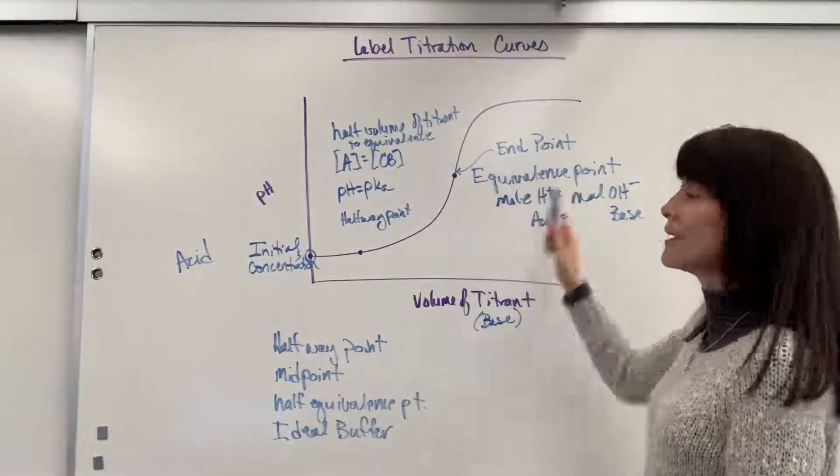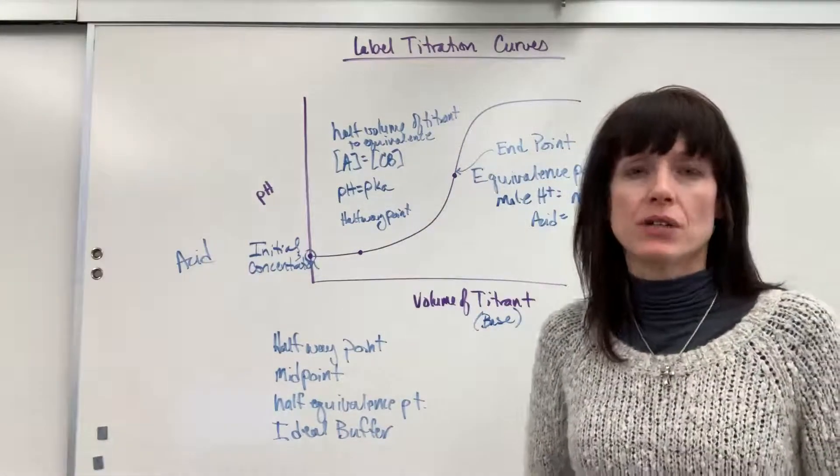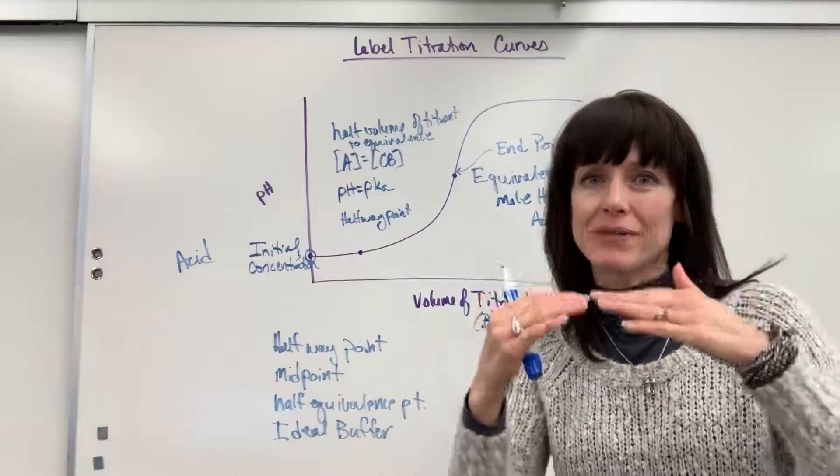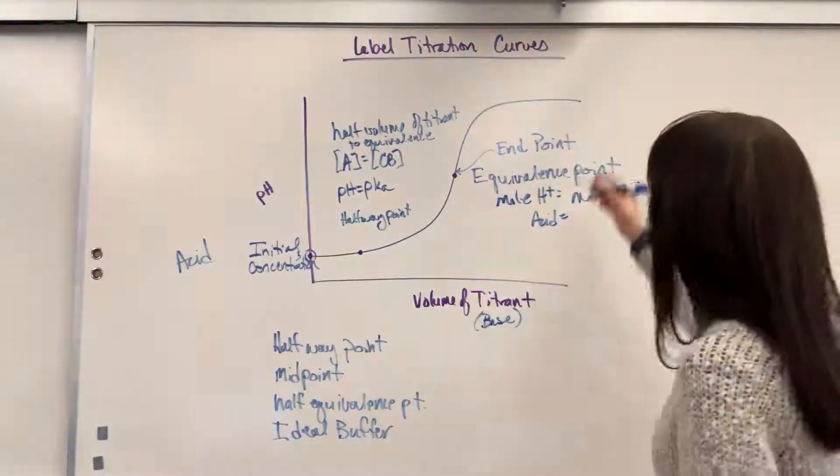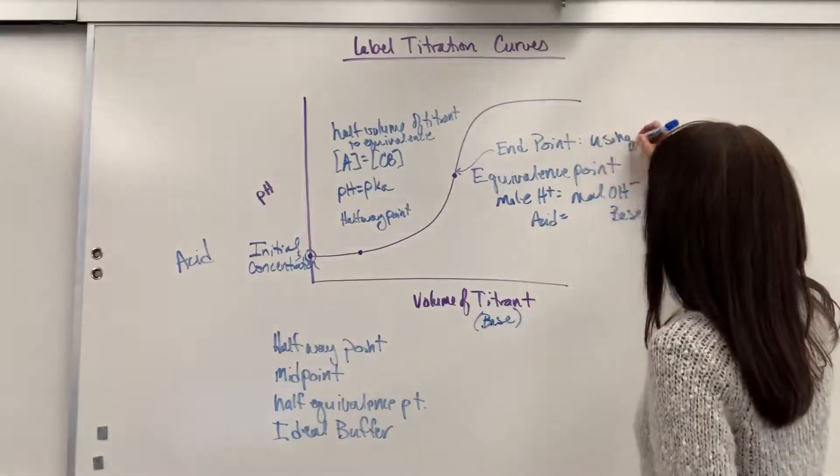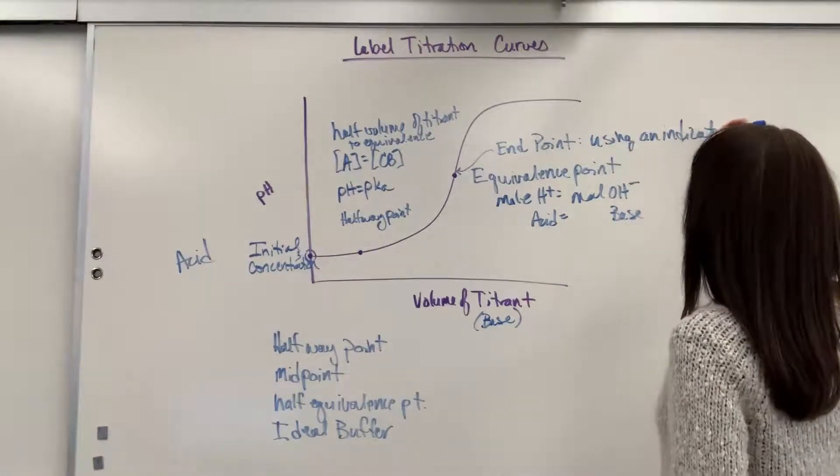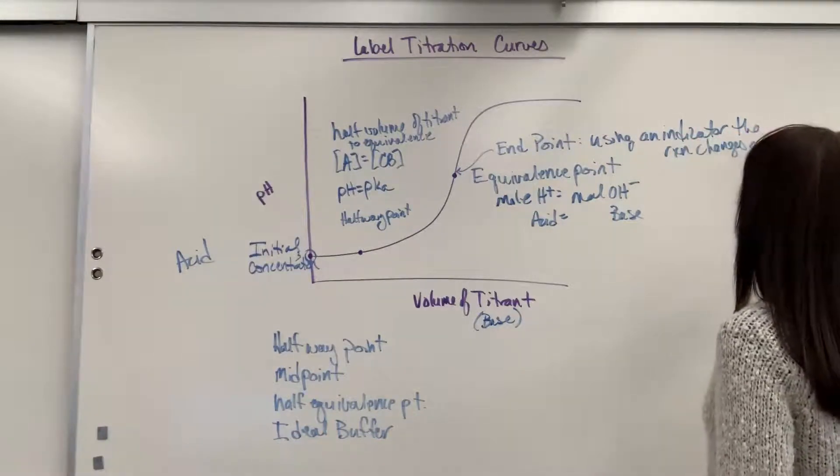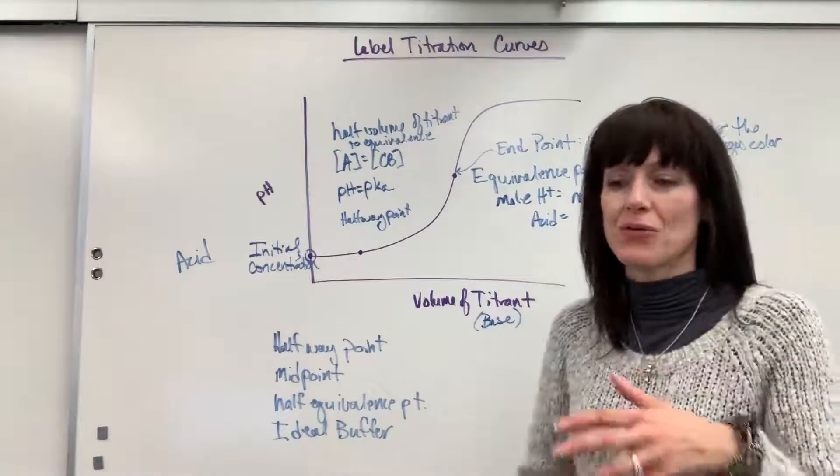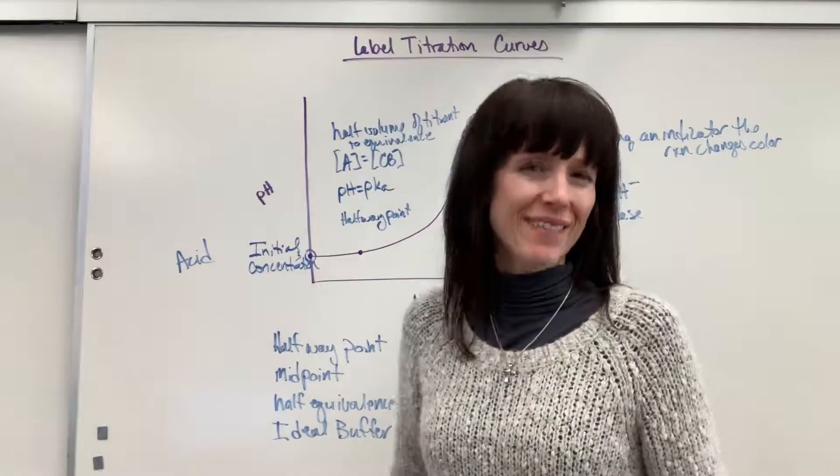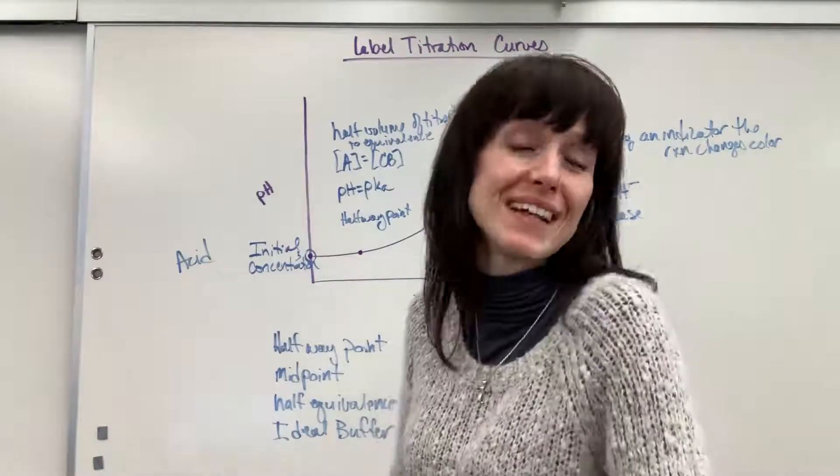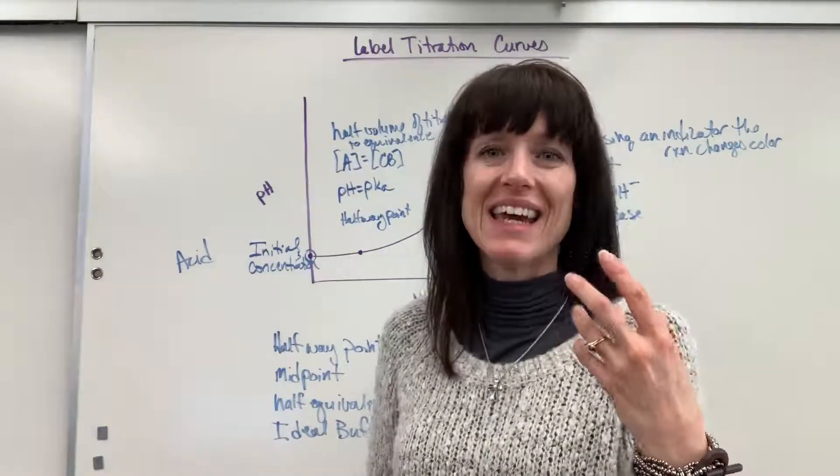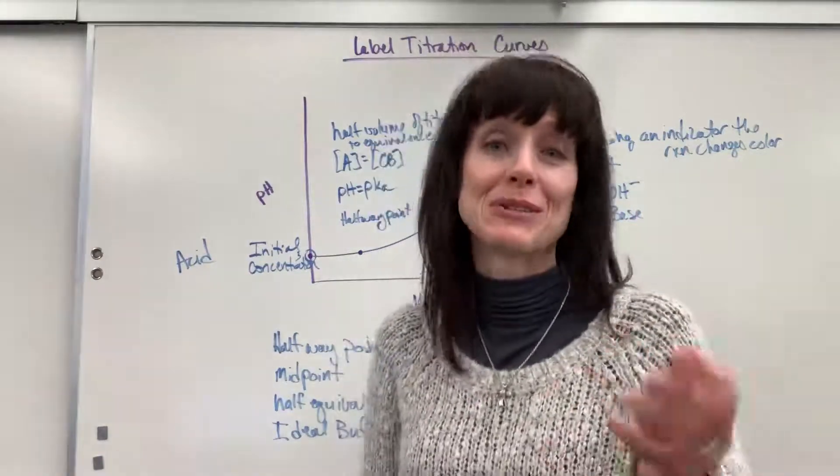The indicator gives us what's called the end point. And this is also an important term to know. The end point is simply where the reaction changes color when it reaches the equivalence point. So this is going to be using an indicator. The reaction changes color. And when that color changes, so you go from clear to pink if you're using phenolphthalein. By the way, that's the first titration I did when I was 12 years old with my dad at a laboratory. And it was that moment when I saw that beautiful, brilliant pink that I went, chemistry is so cool. And I was hooked. I was hooked.